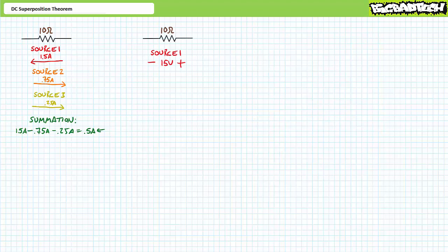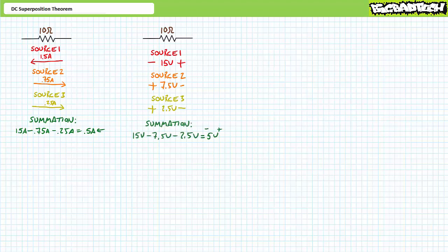This housekeeping trick also works for voltage polarity. Given the previously mentioned current directions, source one would induce a 15 volt drop across the resistor positive to negative right to left, source two would induce a 7.5 volt drop positive to negative left to right, and source three would induce a 2.5 volt drop positive to negative left to right. Accounting for polarity, the summation results in a 5 volt drop positive to negative right to left — not a 25 volt drop.